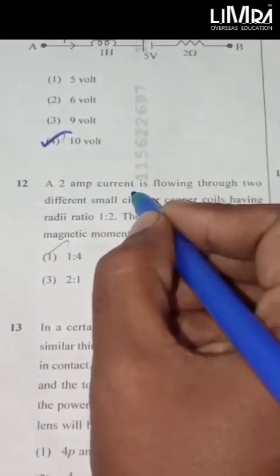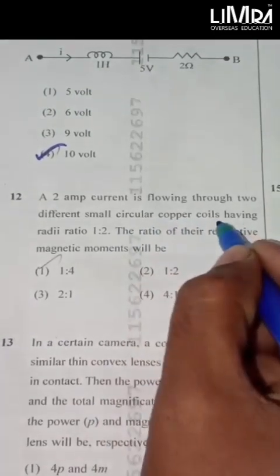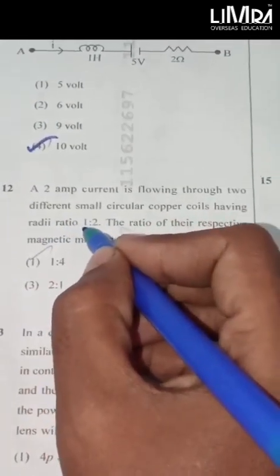A 2 amp current is flowing through two different small circular copper coils having radii ratio 1 is to 2. The ratio of their respective magnetic moments will be 1 is to 4.